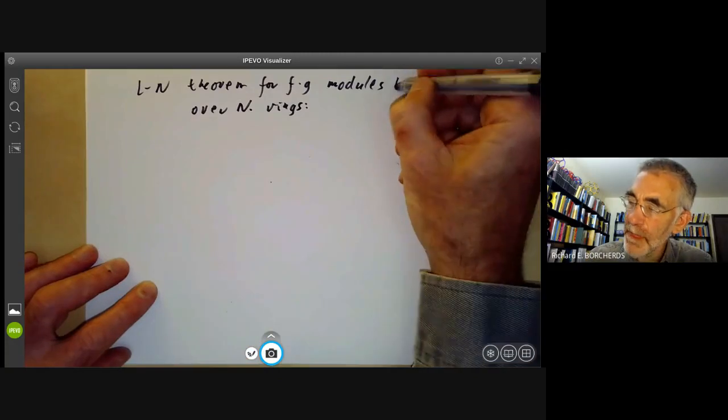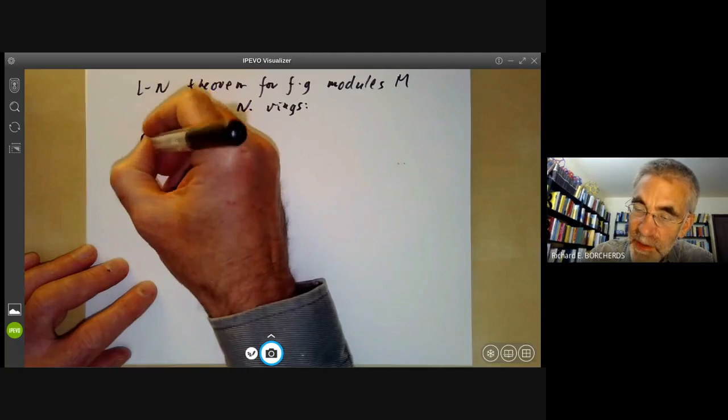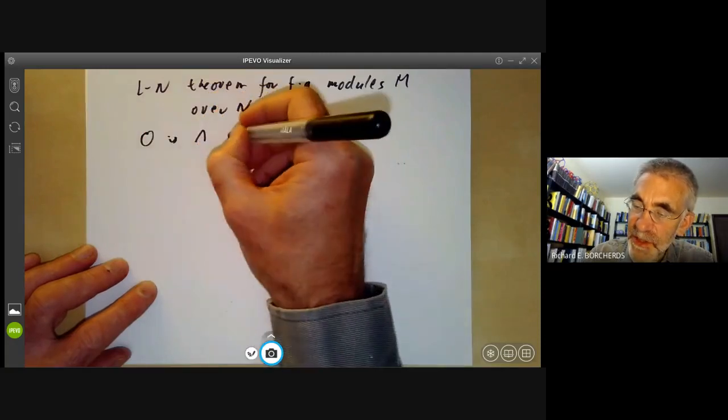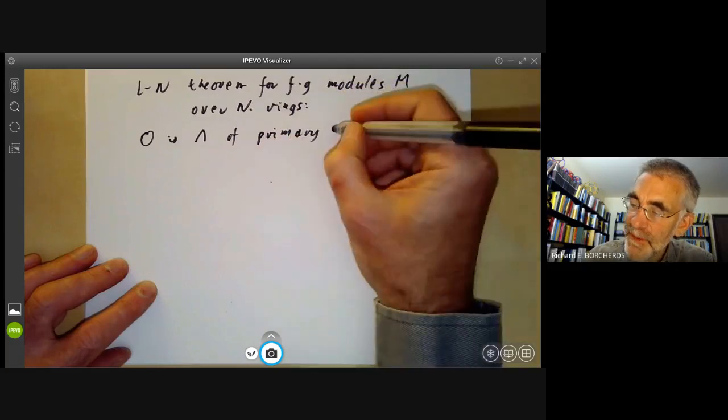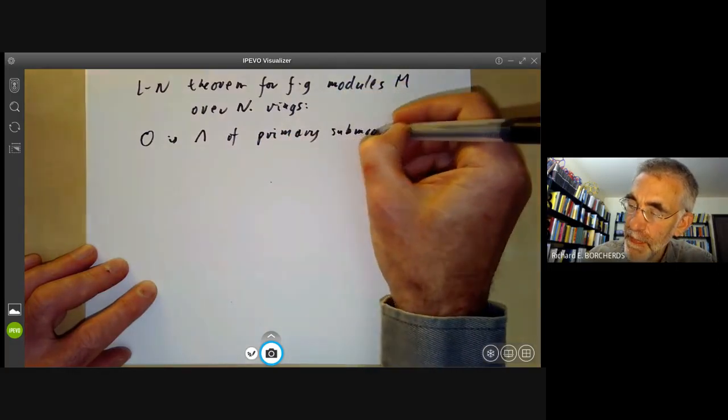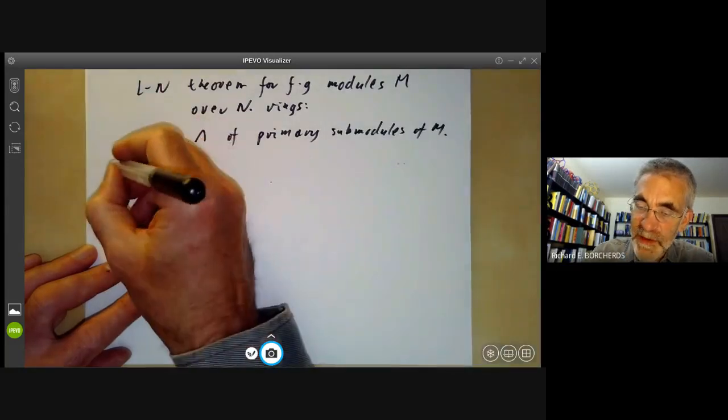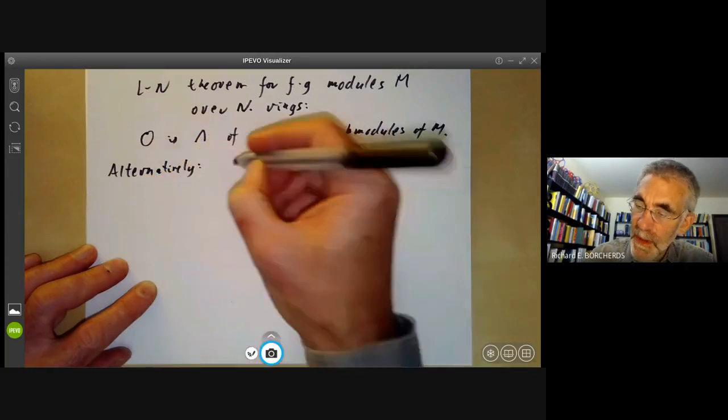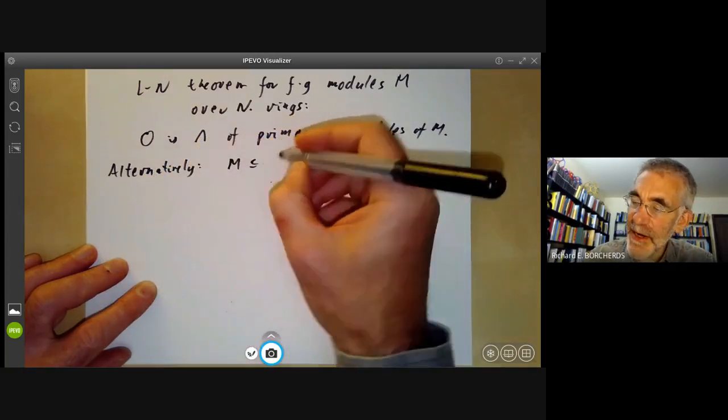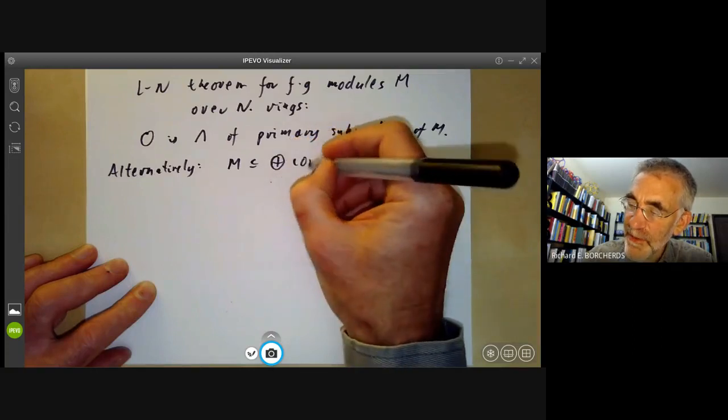So these are going to be finitely generated, says that zero is an intersection of primary submodules of M, or alternatively, M is actually contained in a finite direct sum of co-primary modules.